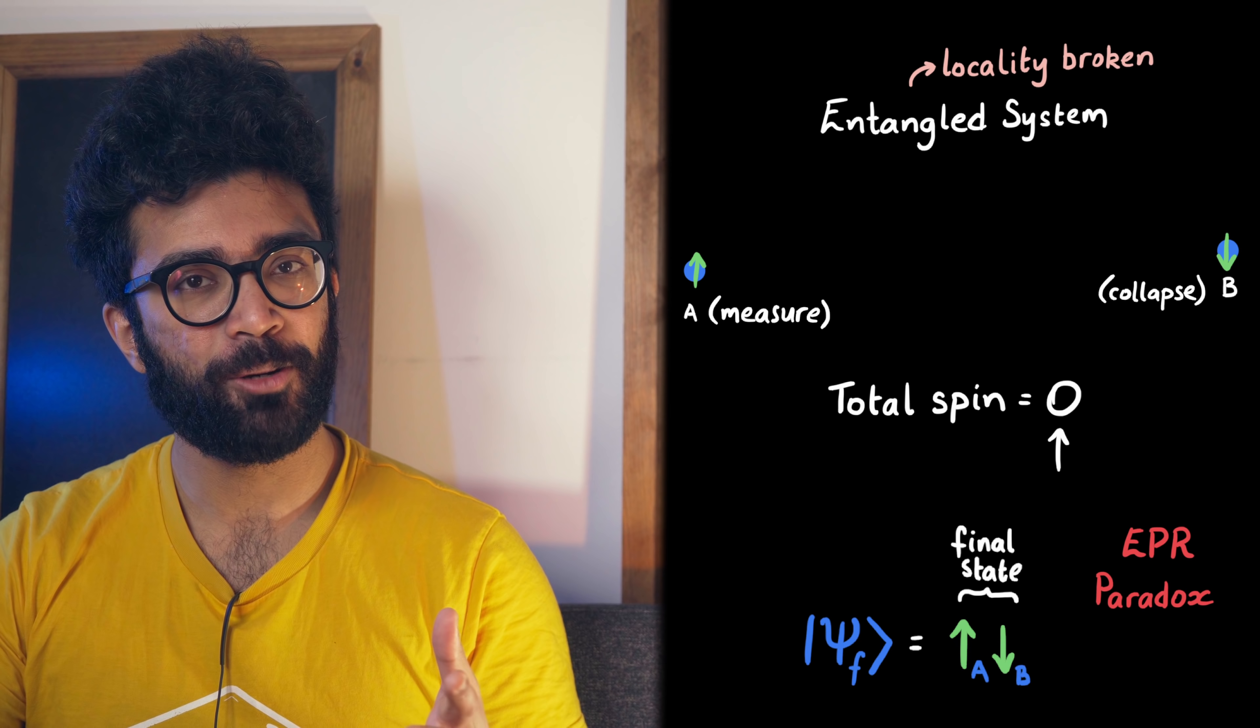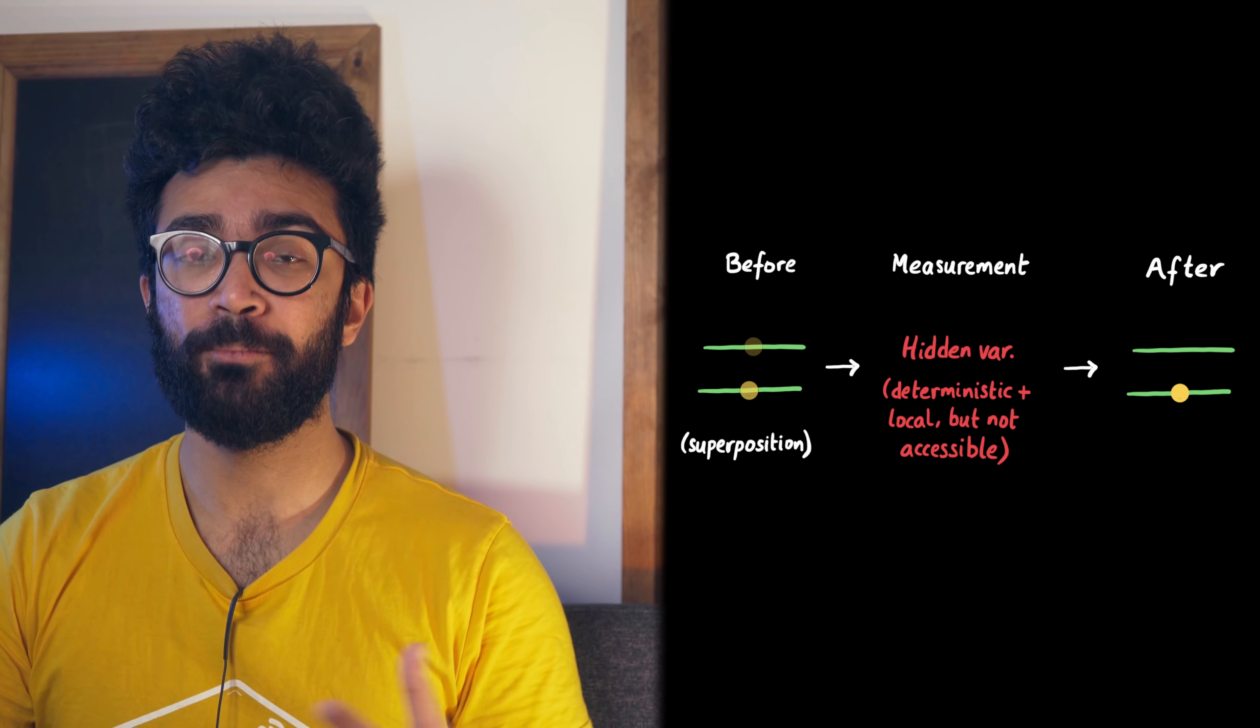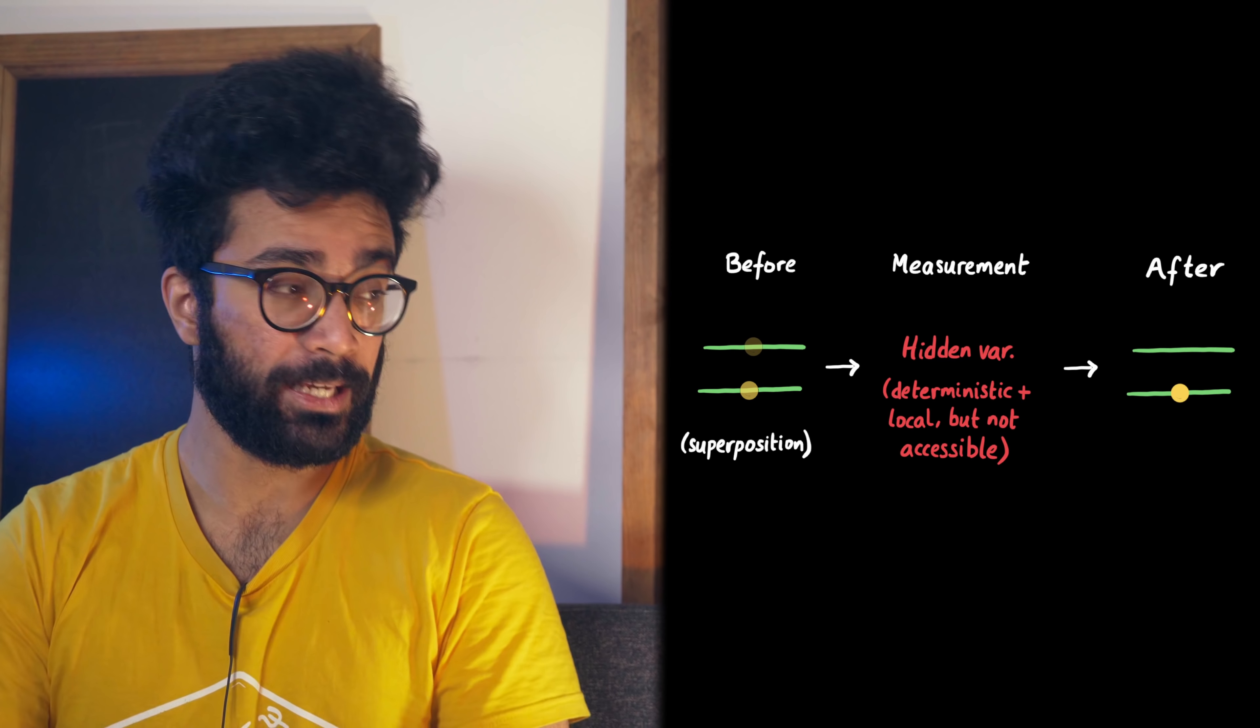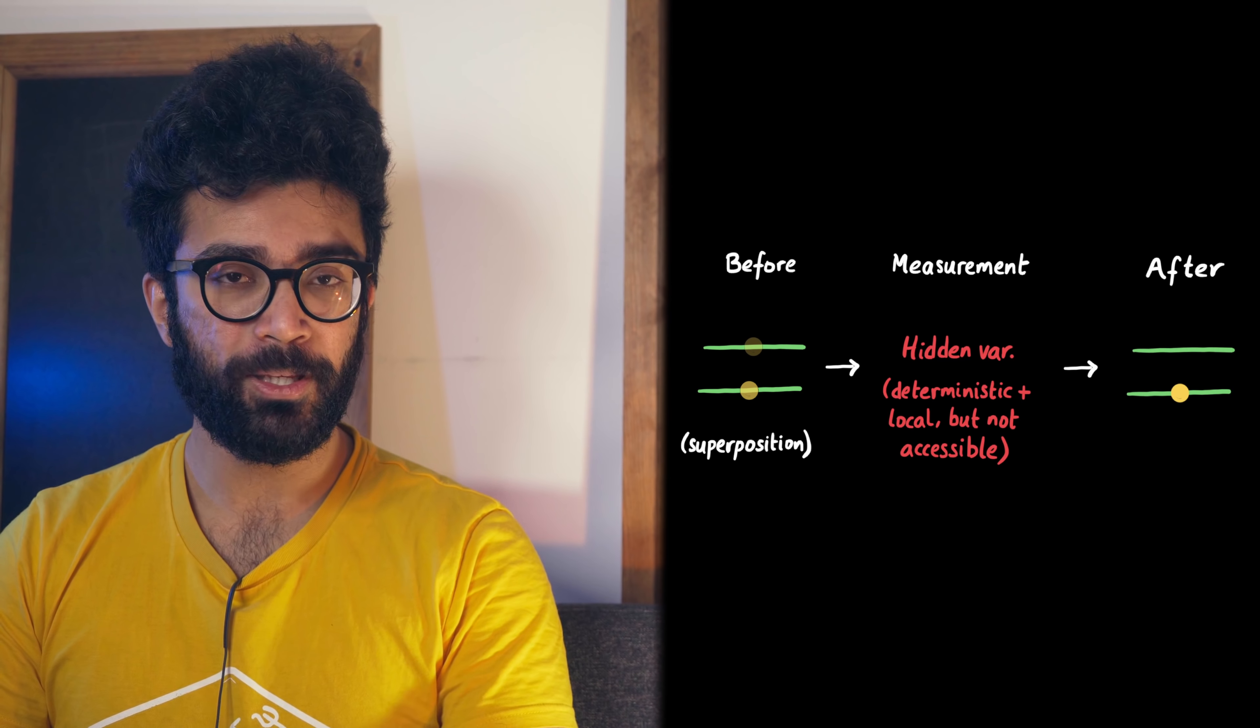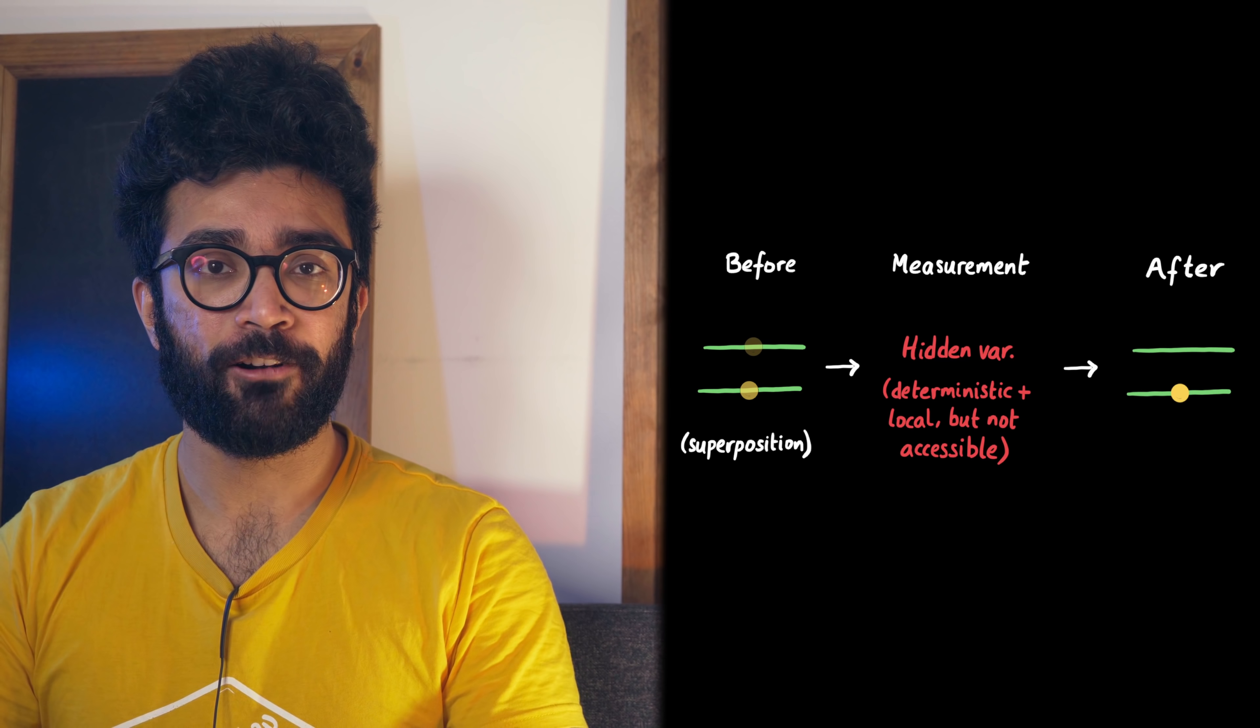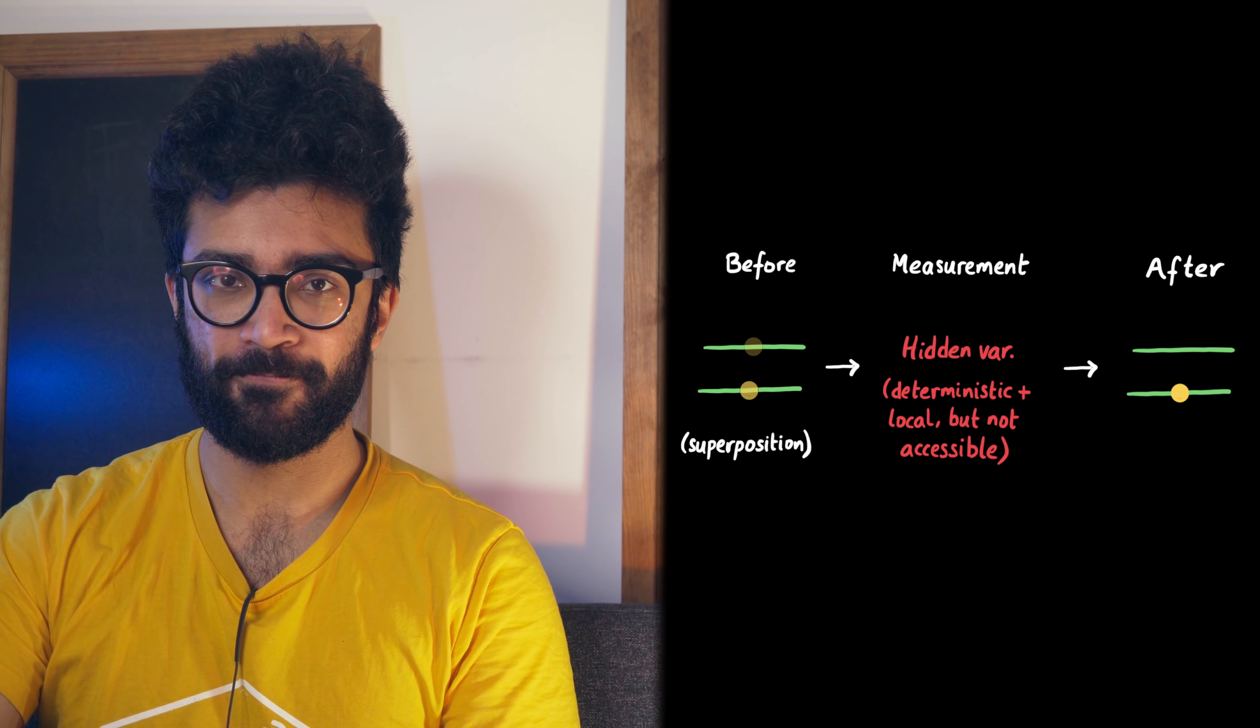Einstein preferred a hidden variable theory that was deterministic and local, so that something that was not necessarily accessible by us while making measurements, aka the hidden variables, could be used to calculate what result would be obtained when a particular measurement was made at a particular time on a particular system. And since the hidden variable was found in the whole system, this meant it didn't necessarily break locality either.